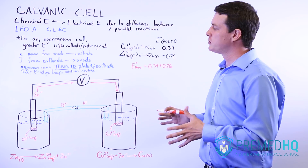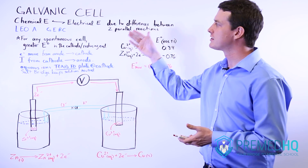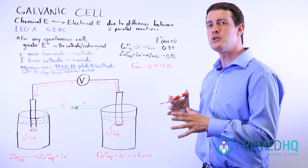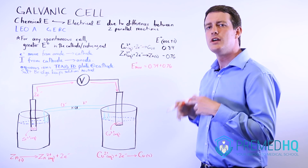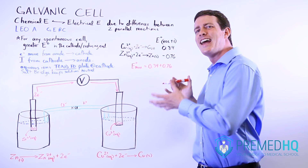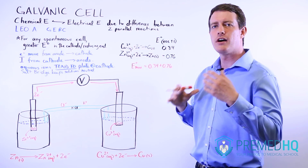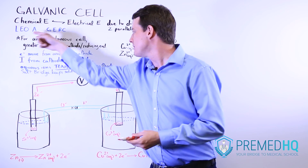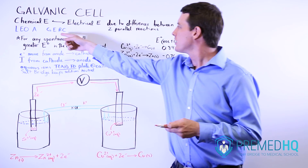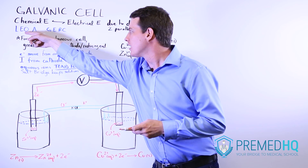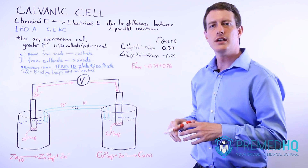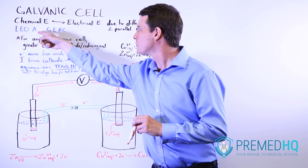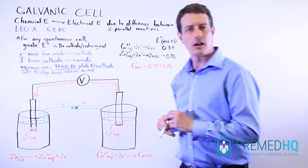The first thing to notice about any electrochemical cell is that it converts chemical energy to electrical energy. This is due to two parallel reactions occurring at the same time: a reduction and an oxidation. The reduction occurs at the cathode and the oxidation occurs at the anode. Reduction is the gain of electrons, whereas oxidation is the loss of electrons.